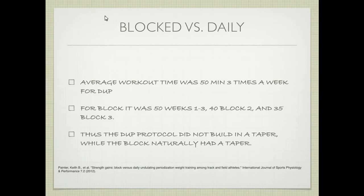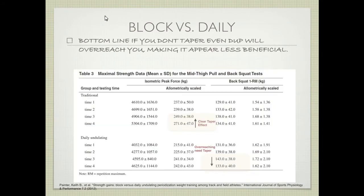A few points to make: the average workout time was 50 minutes three times a week for the daily undulating periodization group. For the block group, it was 50 minutes for weeks one through three, 40 minutes for block two, and 35 minutes for block three. The DUP protocol did not build into a taper, while the block naturally had a taper. So what's working in favor of the block is the tapering effect — fatigue is going to go down.